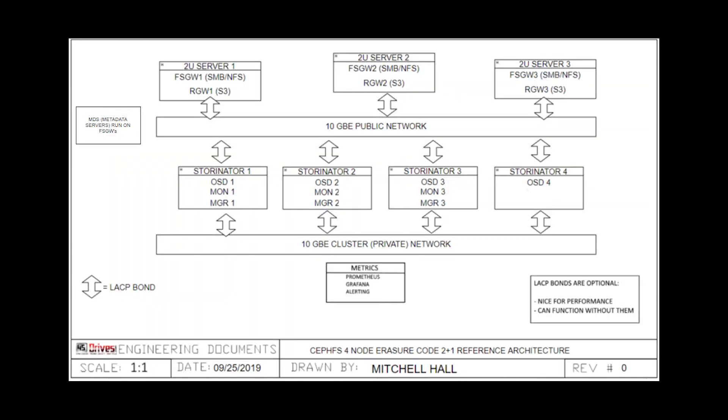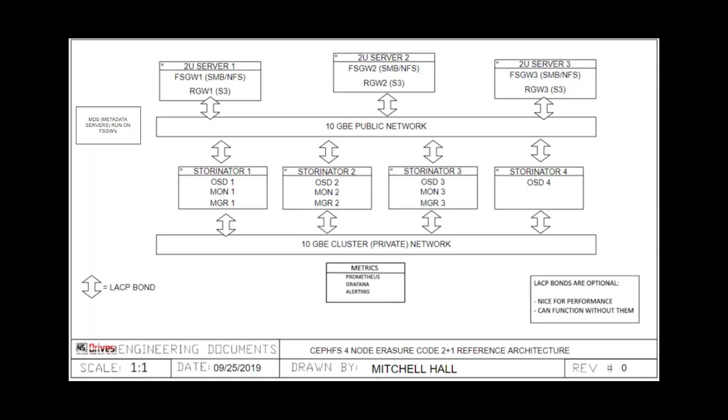All these nodes have to communicate somehow, and the way Ceph does it is through networking in a LAN. The way we like to do it is to have a private network for your OSDs, and a public network for the rest of the cluster, as well as your gateways and anything that's client-facing. The reason why you do this is because the OSD nodes are really chatty — they handle self-healing, replication, and moving data through the cluster. So it's best to keep that off the public network, because that gives more bandwidth for IO and things that clients want to do on the cluster.